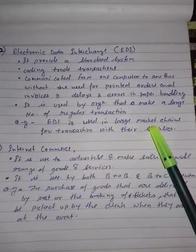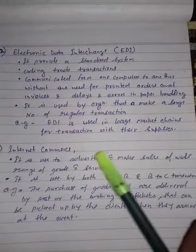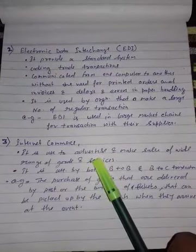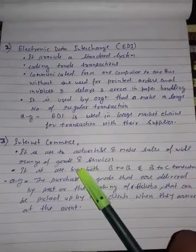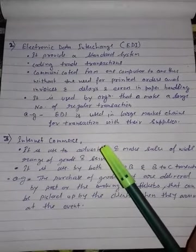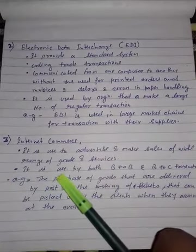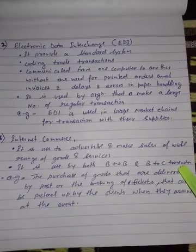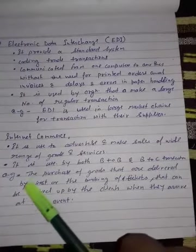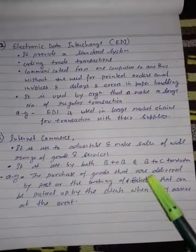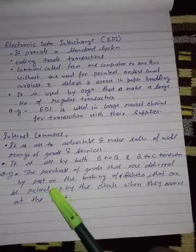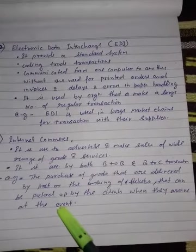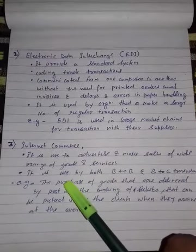The third category is internet commerce, which is used to advertise and make sales of a wide range of goods and services. It is used in business-to-business and business-to-consumer transactions, such as the purchase of goods delivered by post or the booking of tickets that can be picked up by clients when they arrive at events. This is the domain of internet commerce.